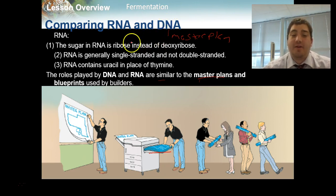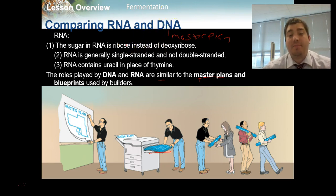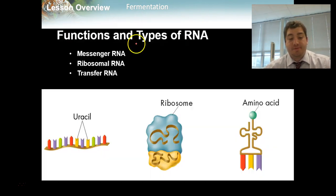DNA is a master plan, RNA is a blueprint — a copy that leaves the nucleus to go out into the cell and do things.